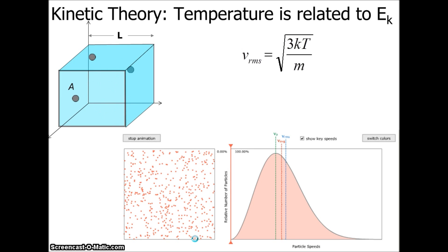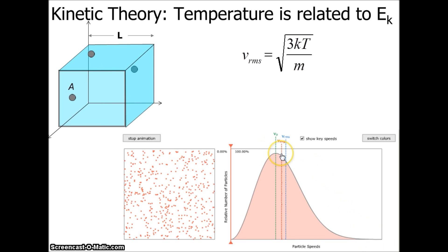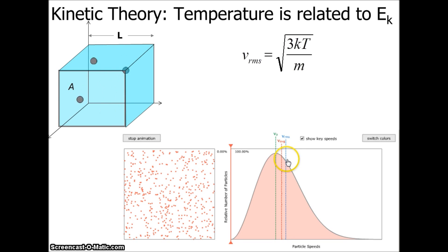Coming back to the root mean square speed — what is it exactly? Here's a graph with particles in an animation showing elastic collisions between point particles. If you look at the distribution of their speeds, there's the most probable speed V_P, then the average speed, and then the root mean square speed, which is related to the kinetic energy of the particles. The RMS speed is close to the average speed but not exactly the same.